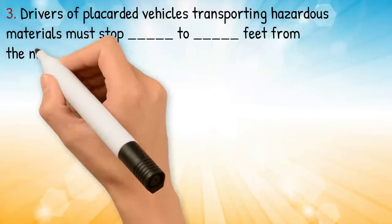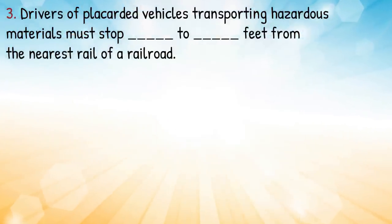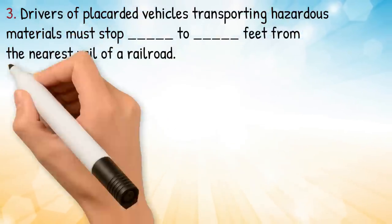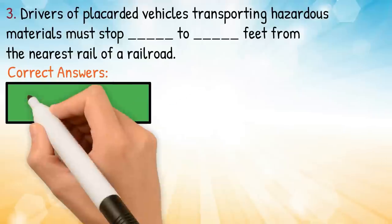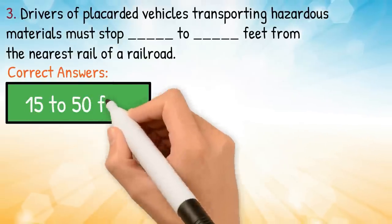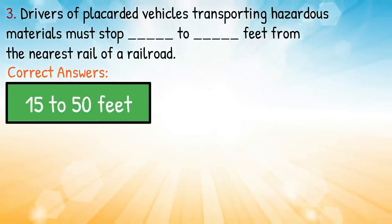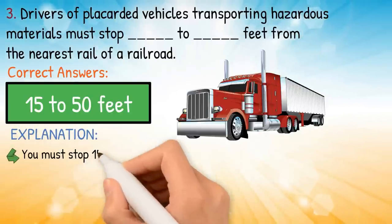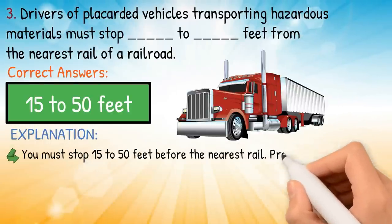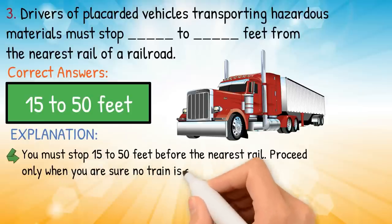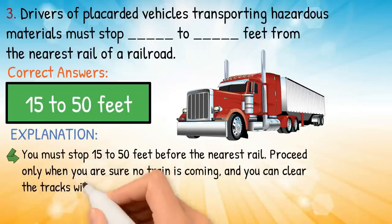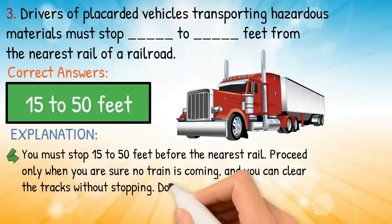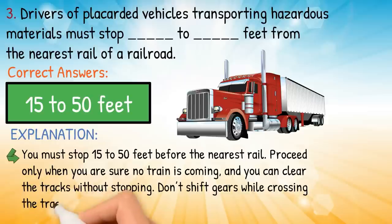Question three: drivers of placarded vehicles transporting hazardous materials must stop blank to blank feet from the nearest rail of a railroad — correct answer: 15 to 50 feet. Explanation: you must stop 15 to 50 feet before the nearest rail. Proceed only when you are sure no train is coming and you can clear the tracks without stopping.